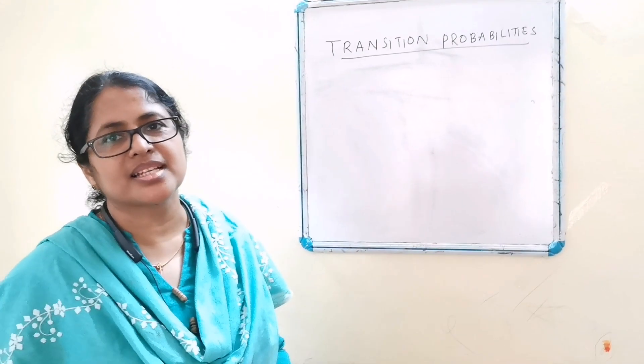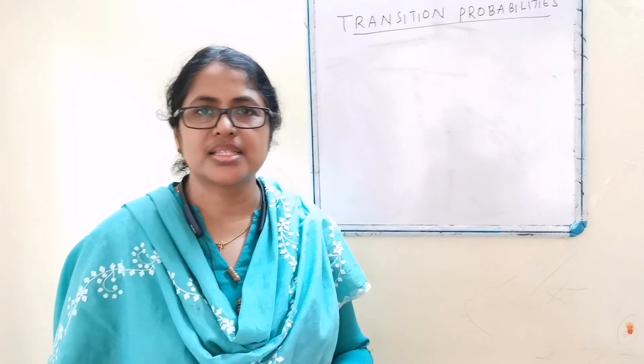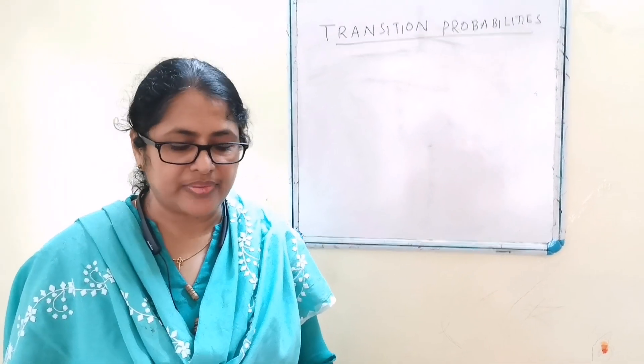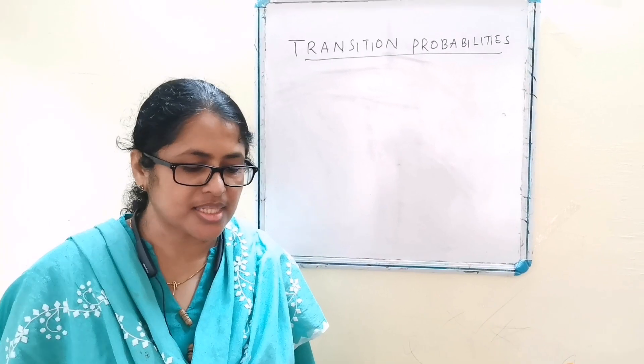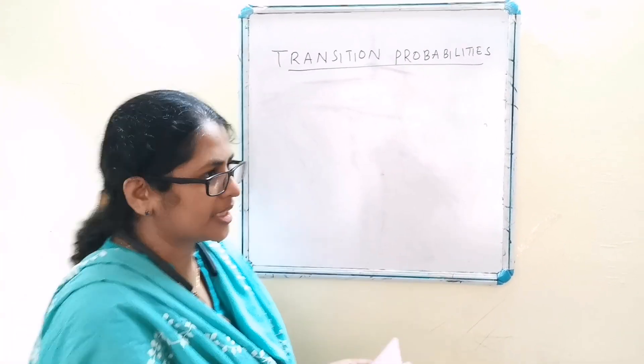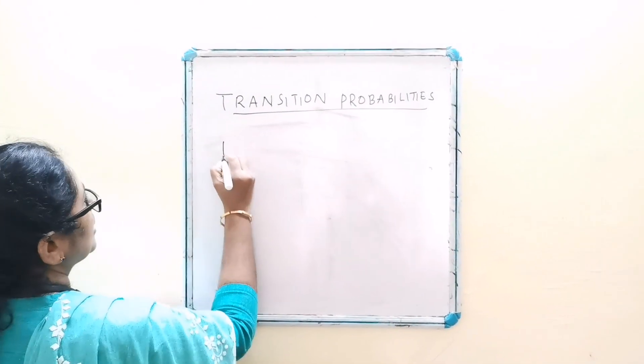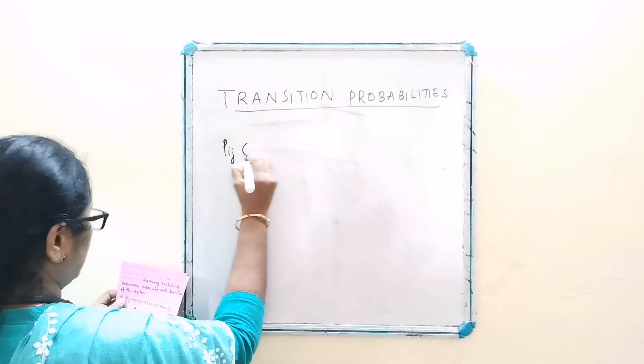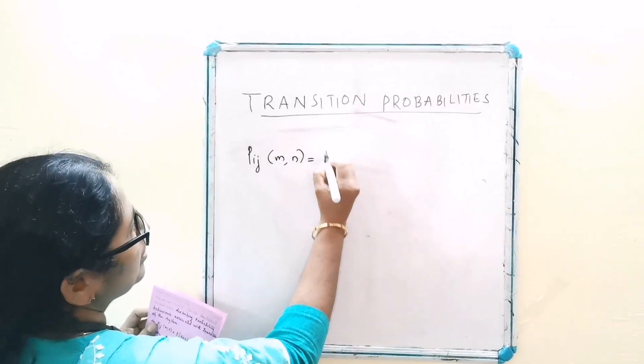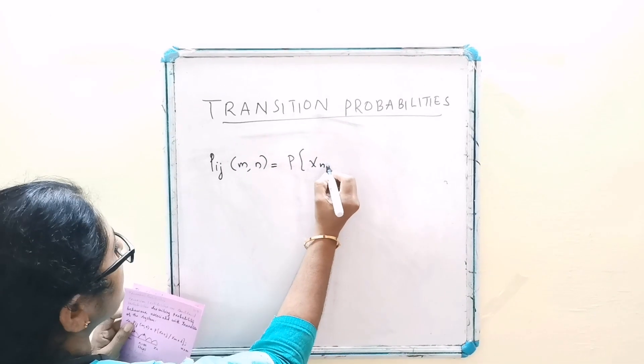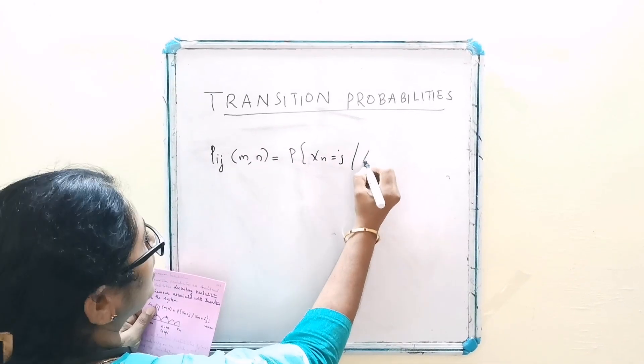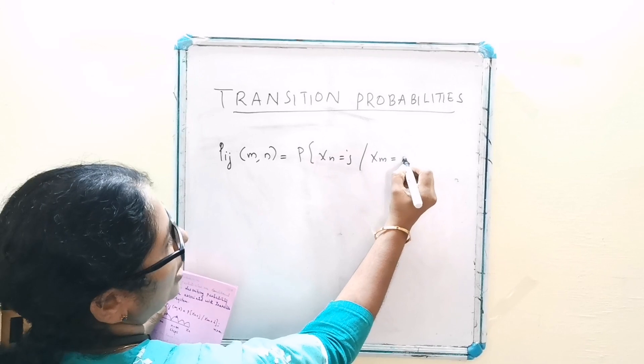Transition probabilities are conditional probabilities describing probability behavior associated with transition of the system. That is, pij(m,n) is equal to probability of Xn equal to j given Xm equal to i.